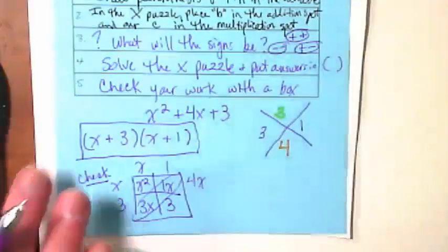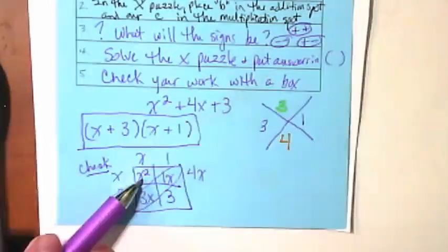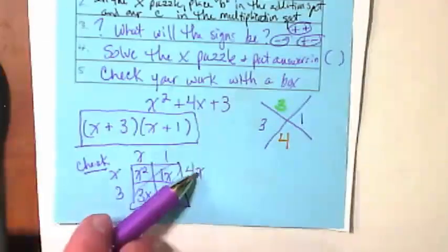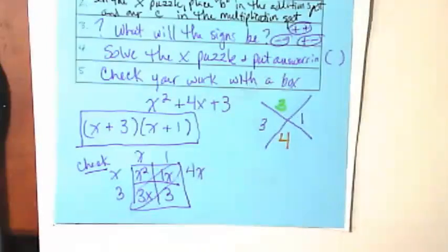But we're going to first multiply it and check because that's what number 5 says. We're going to check our work with a box. Does it work when I multiply out what I found? I end up with x squared, 3x and 1x is 4x, and 3. So let's try that with some other problems.